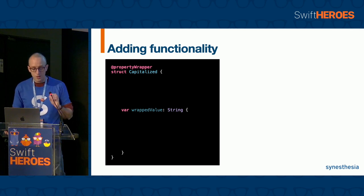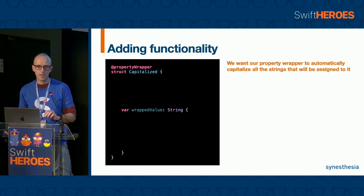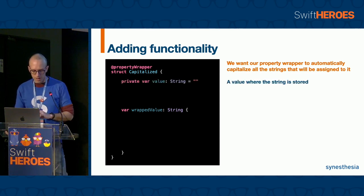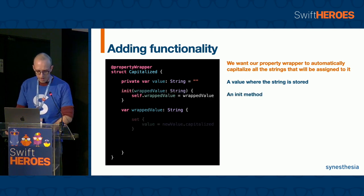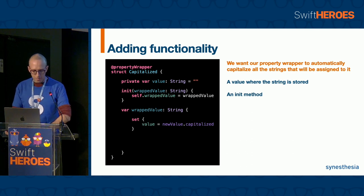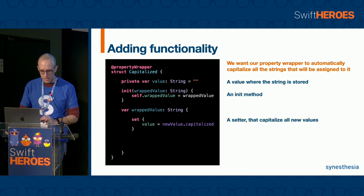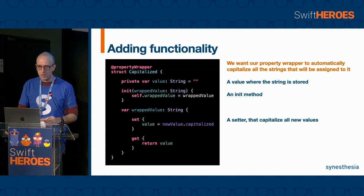As you probably guessed from its name, we want our property wrapper to capitalize all the strings that are assigned to it. To do that, we have to add a value where the string is stored, and an init method, and inside the wrappedValue a setter method in order to wrap the value that capitalizes the new value and stores it, and a getter method where the value is returned.